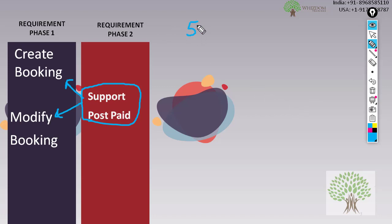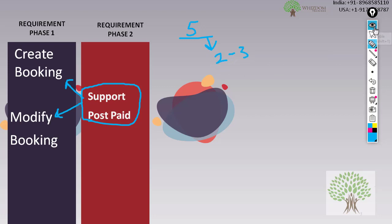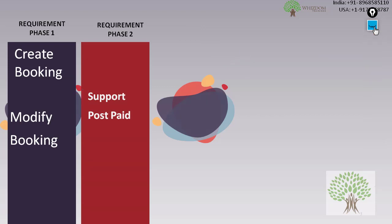If you have a manual test case, it might take just 5 minutes to test the scenario manually. But if you have an automation script which has to be developed for that test case, it might take much more time — maybe 2 days, maybe 3 days to develop the script. The process of building automation scripts is costly and takes time.